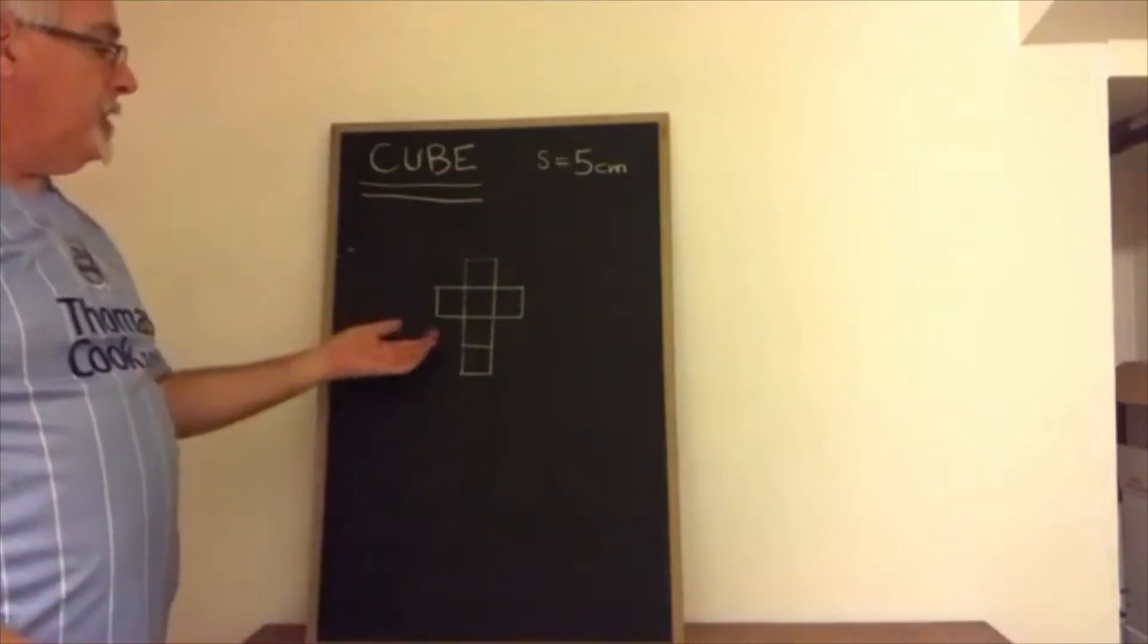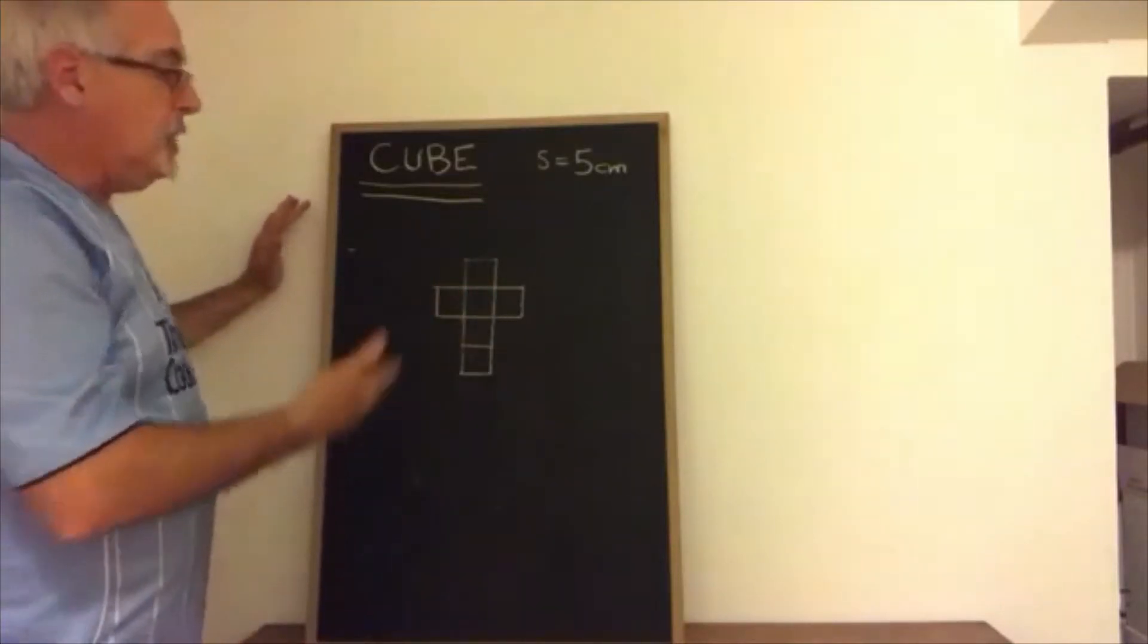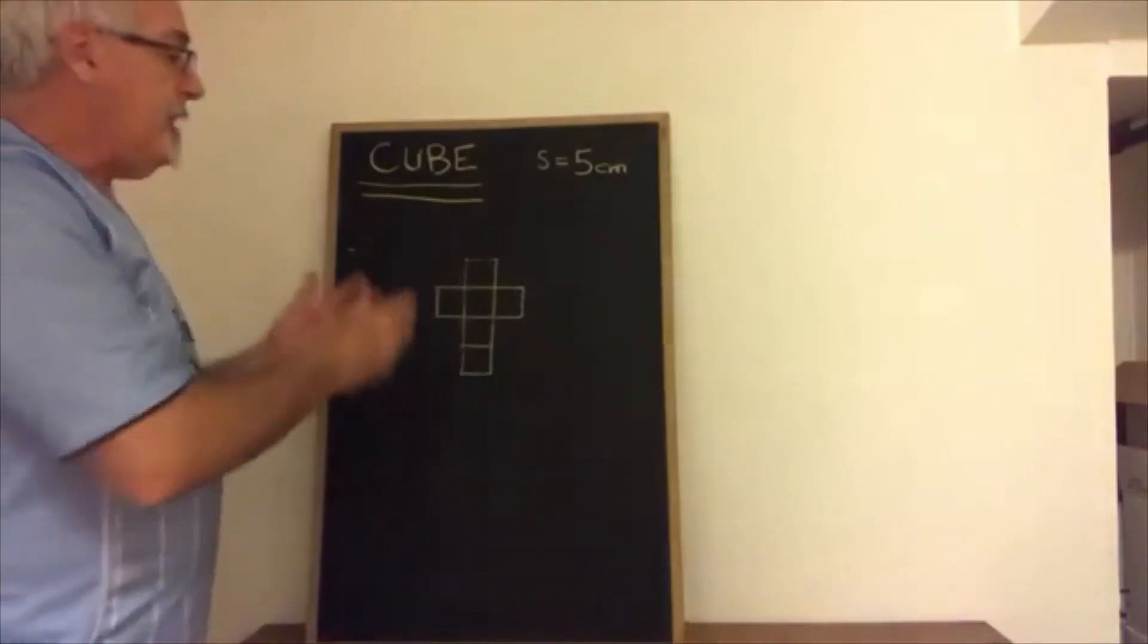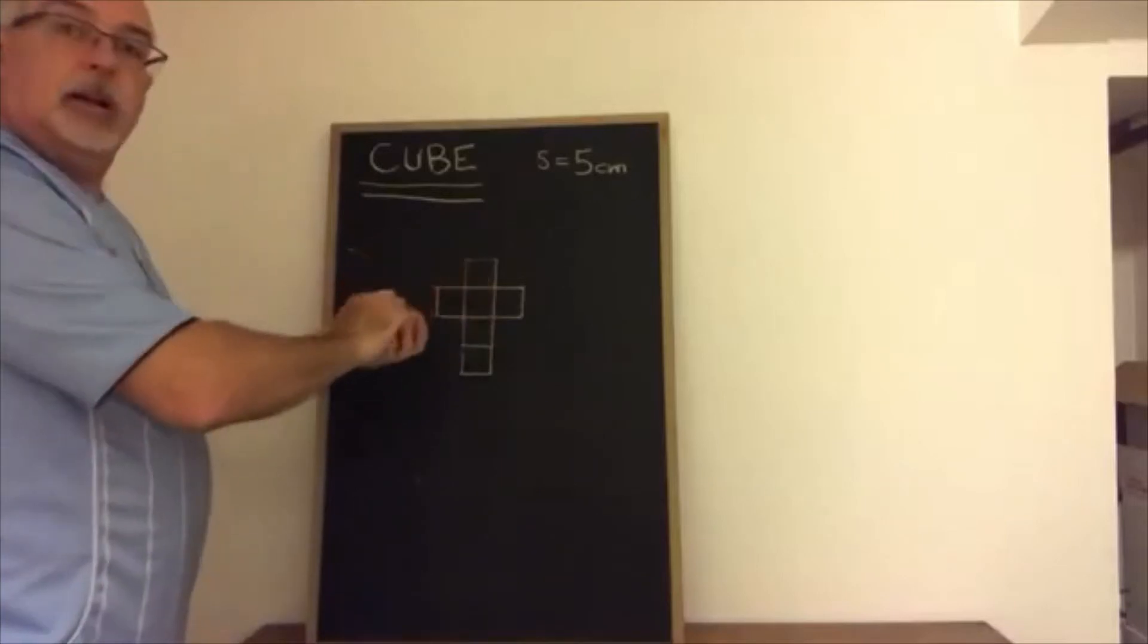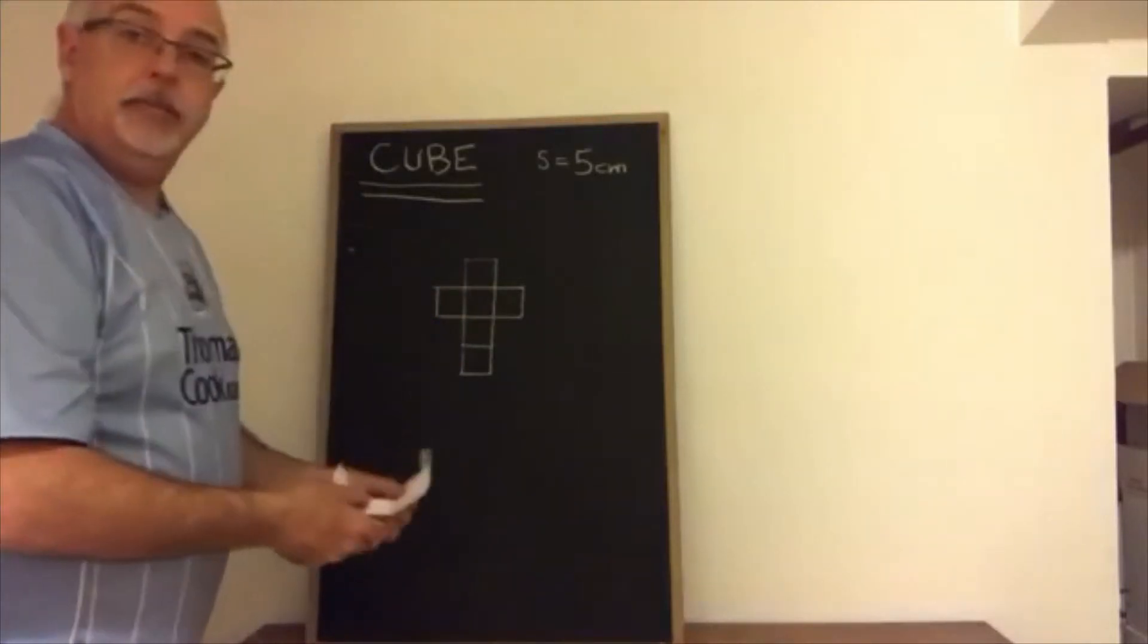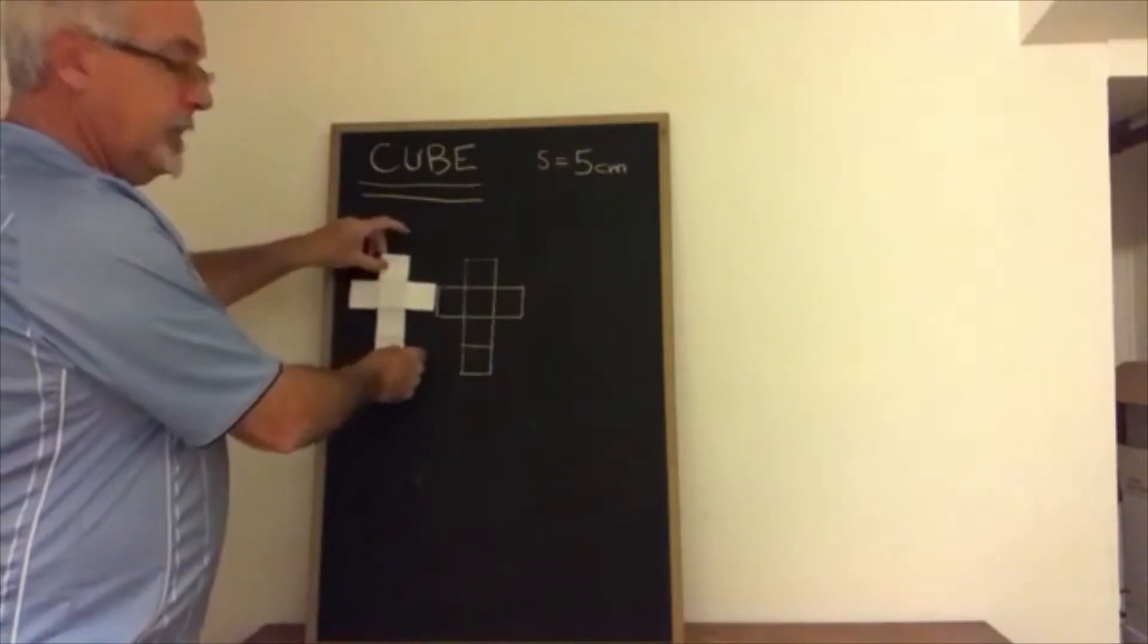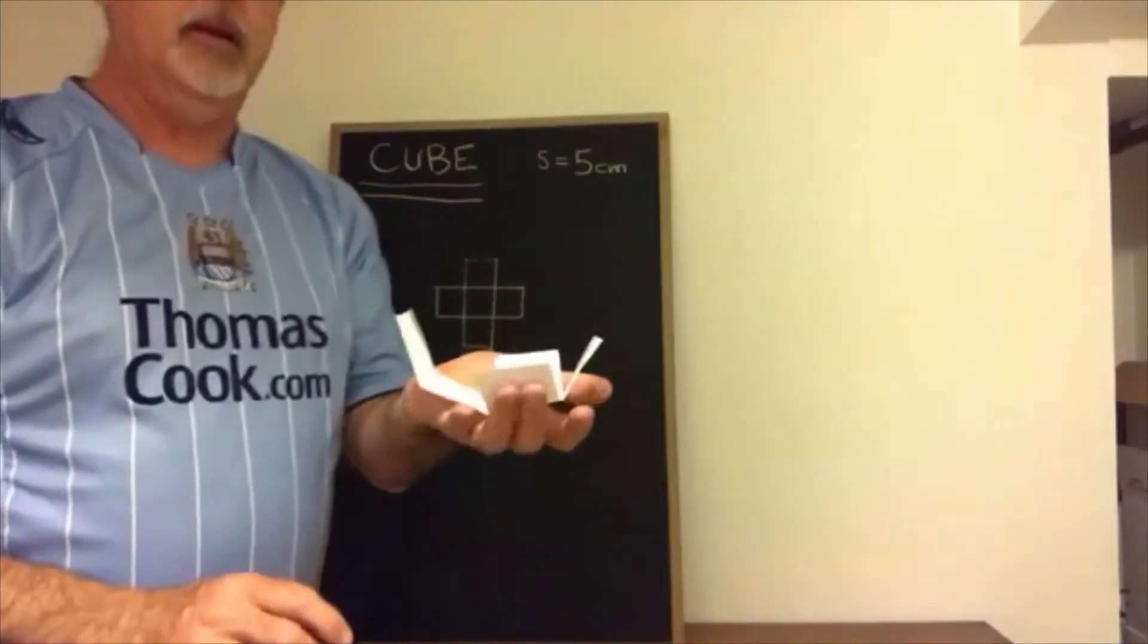Okay so here's my net drawing. You can see that I have all six squares showing so all six faces of the cube are showing and they are connected together in a way that I can imagine folding this up and it successfully makes a cube and I'll prove it because I've also produced the same net drawing on paper and cut it out and I'm going to show that I can fold this together and make a cube.